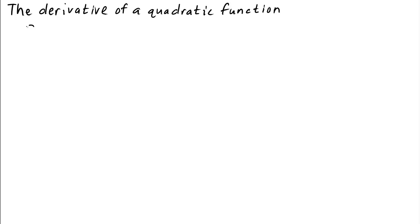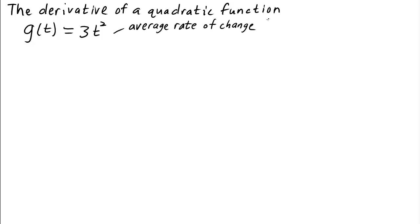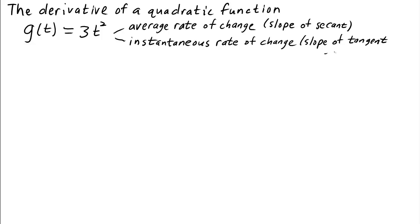Let's call the function g, and use t rather than x for the independent variable. So we'll make g be 3 times t squared. We'll try to calculate both the average rate of change of g — the slope of the secant — and the instantaneous rate of change, the slope of the tangent, or the derivative.